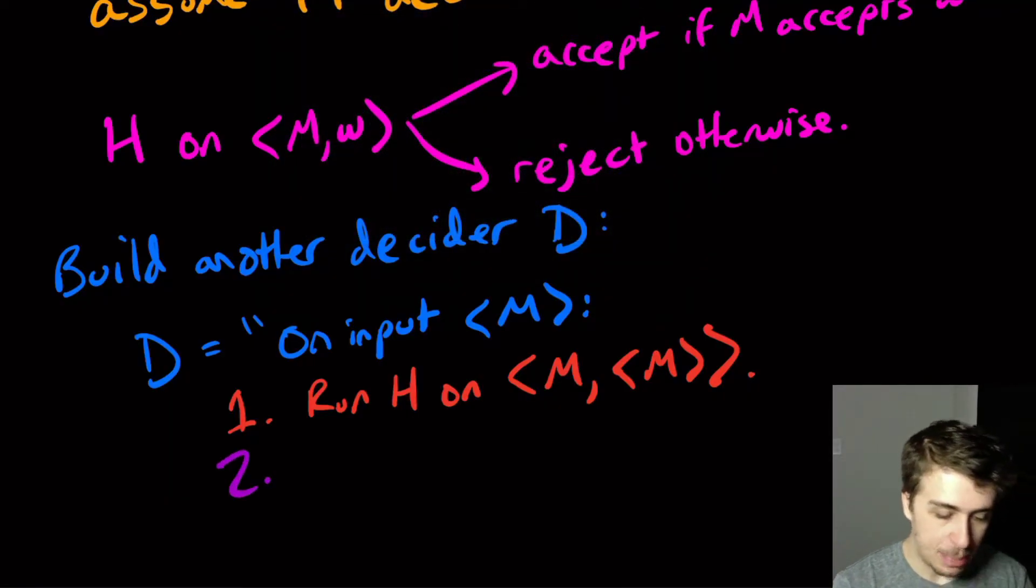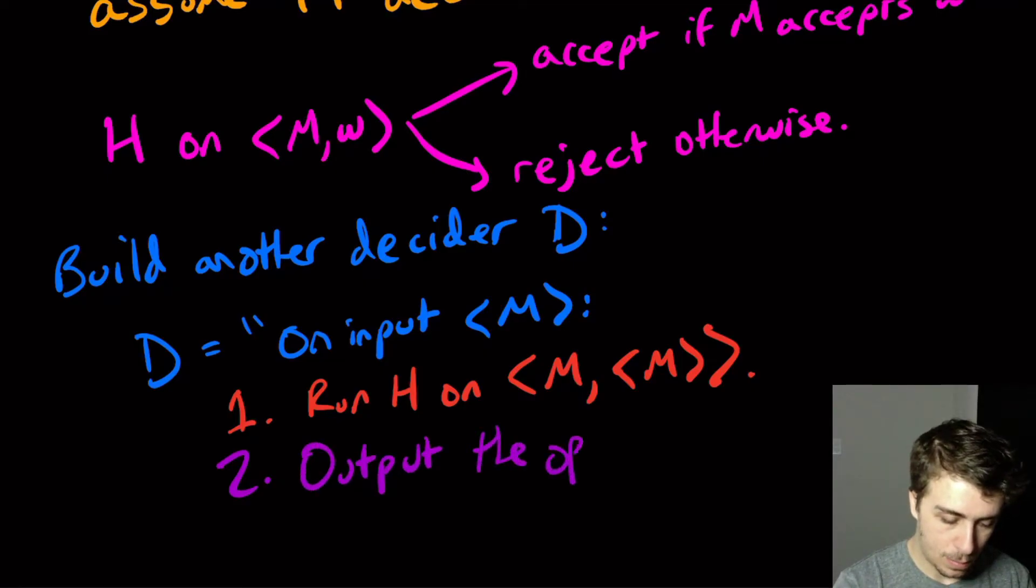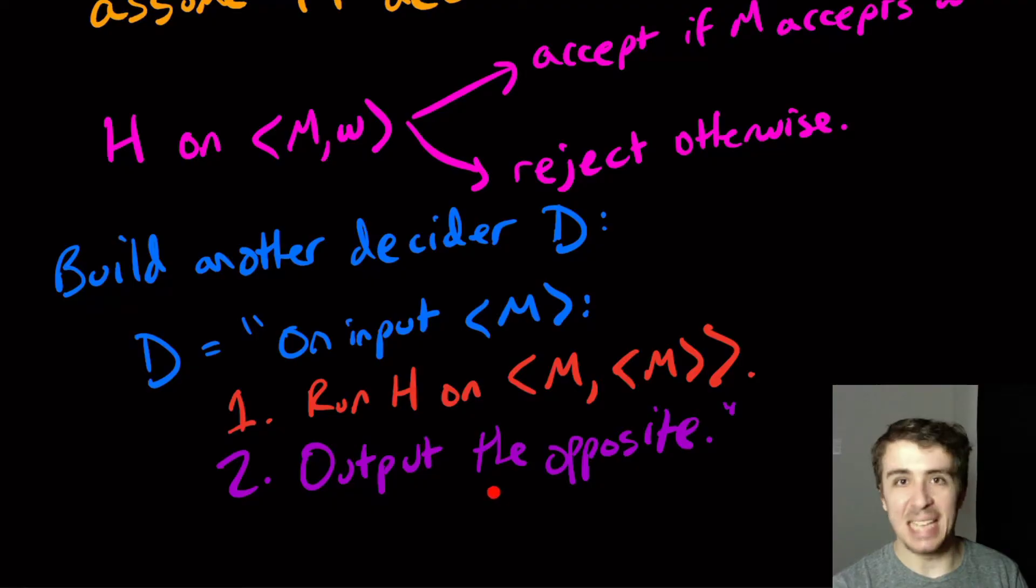So the second step is output the opposite. So whatever the H machine says, do the exact opposite of whatever it is. Well, this is a decider for whatever language it is, because the H machine runs in a finite amount of time by assumption. And clearly this runs in a finite amount of time. So if H says yes, we say no. Or if this thing says accept, we say reject. If H says reject, we say accept. And it decides some language.